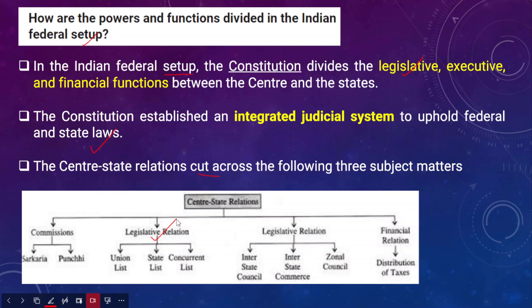Under the union list, the union parliament has the sole authority to make laws. State legislatures similarly have exclusive powers to make laws on subjects in the state list. In the concurrent list, both the union parliament and state legislatures can make laws. However, when there is a clash between union and state legislation on a concurrent list subject, the union law made by parliament will prevail.